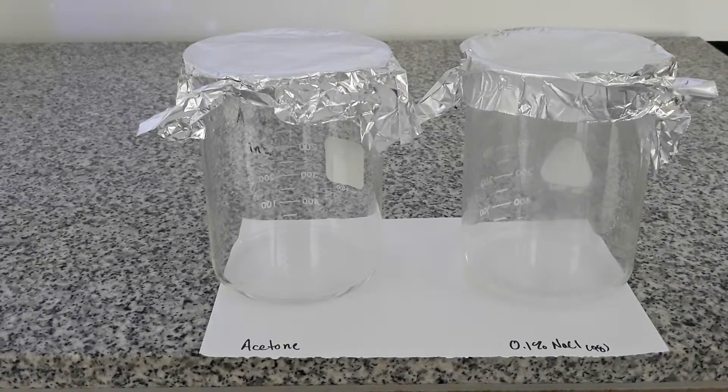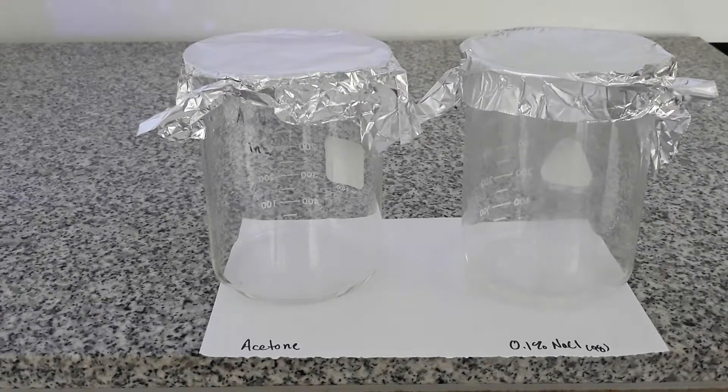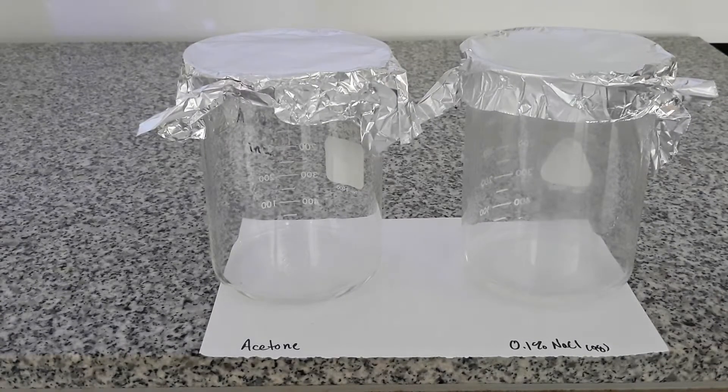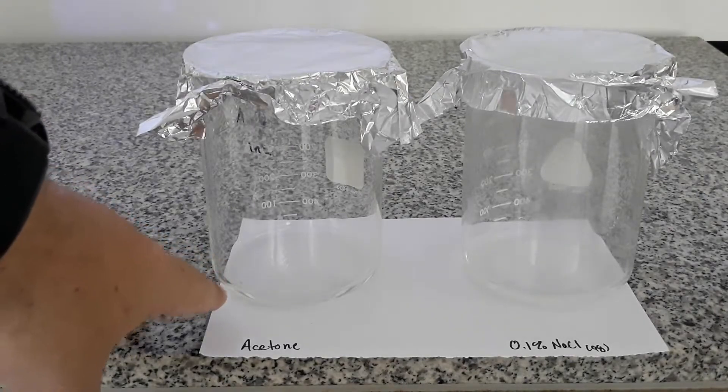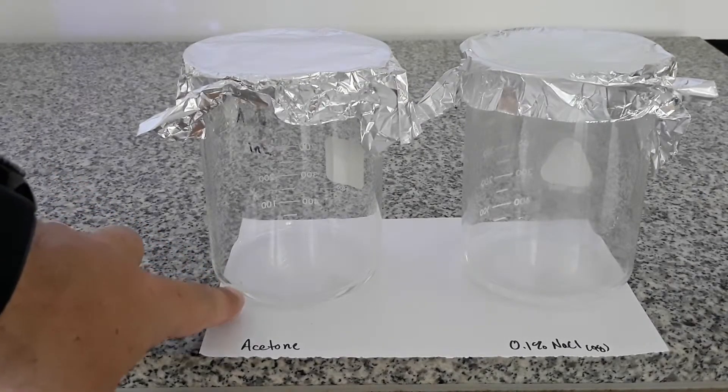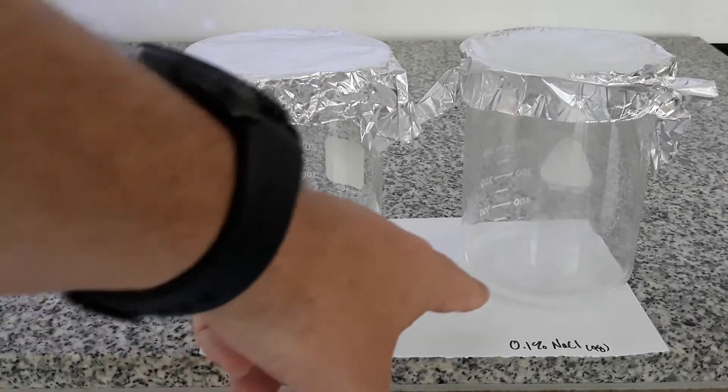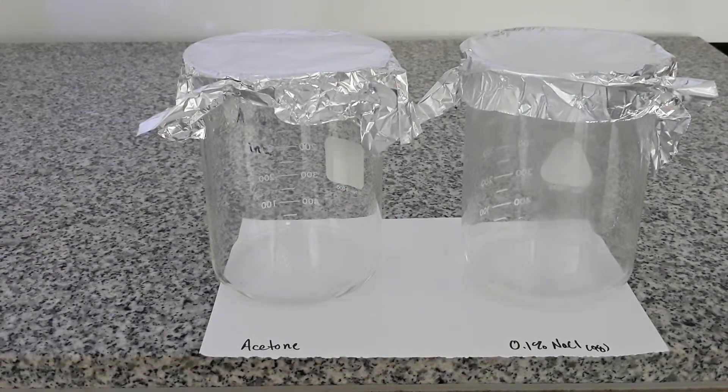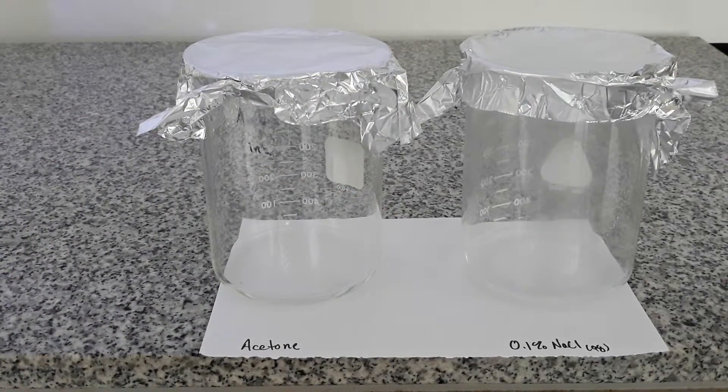Off screen I set up a second page identical to the first for our sodium chloride run. Here we have our development chambers. On the left we have acetone. There's just a little bit of acetone in the bottom of the beaker. On the right I have a 0.1% sodium chloride solution.